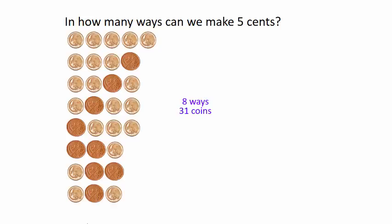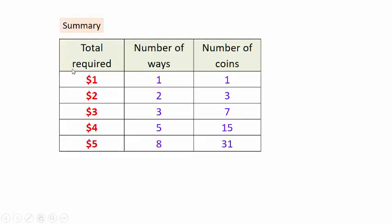Let's summarize the results we have so far. Here we have the totals that we require each time and in the middle column the total number of ways to obtain each of those totals. Do you notice any number pattern there? In fact this one is a very special one, very famous, and it applies or appears in nature and in other applications.